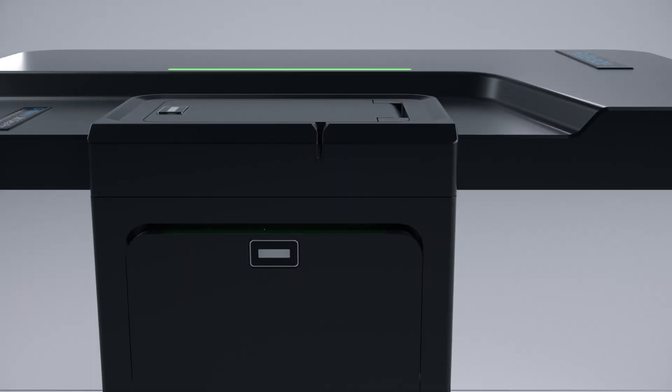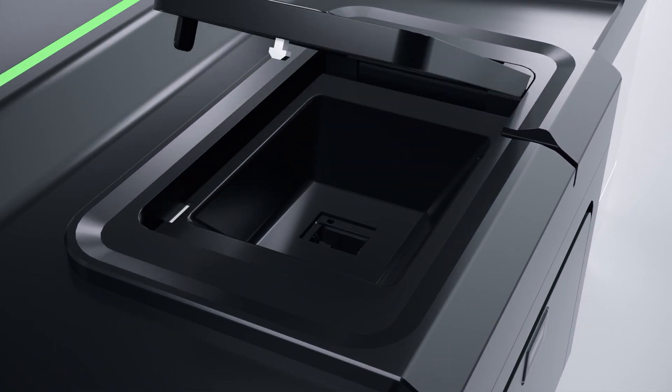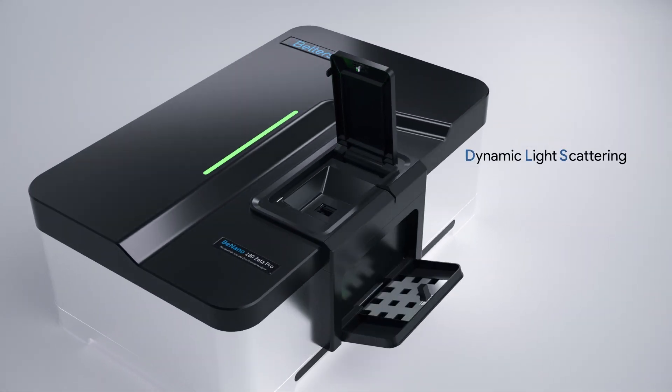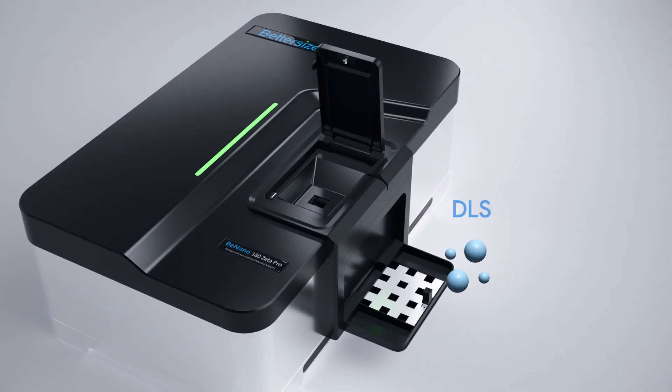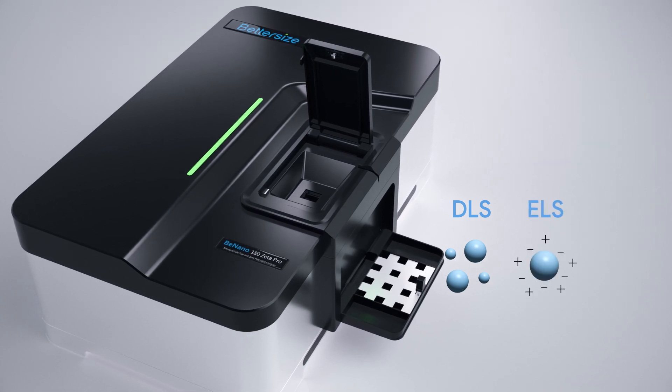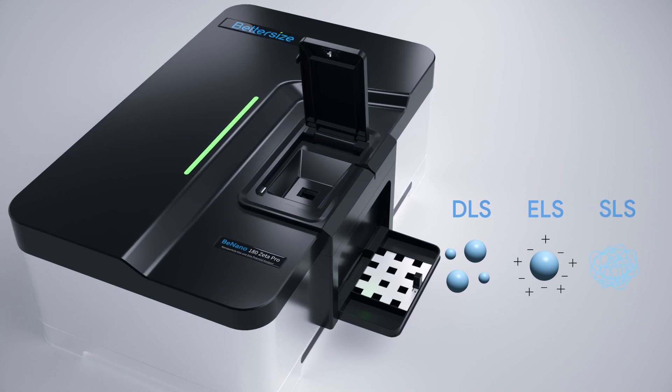Introducing the B-Nano series, an advanced analyzer that combines three novel light scattering technologies for precise nanoparticle analysis: dynamic light scattering for particle size measurement, electrophoretic light scattering for zeta potential measurement, and static light scattering for molecular weight measurement.